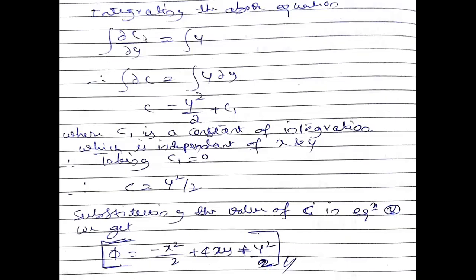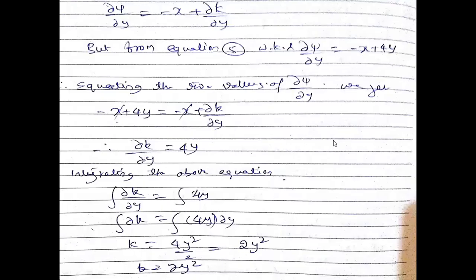To find C, I integrate: integrating ∂C/∂y = y with respect to y gives C = y²/2 + C₁. Since C₁ is a constant not a function of x or y, we take C₁ = 0, so C = y²/2. Substituting this into equation number three, the velocity potential form is: φ = -x²/2 + 4xy + y²/2.